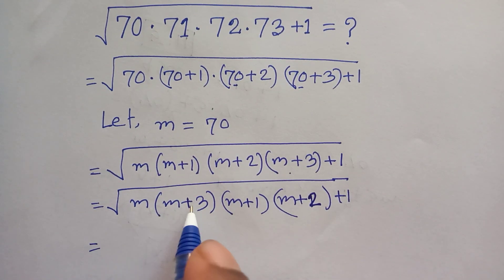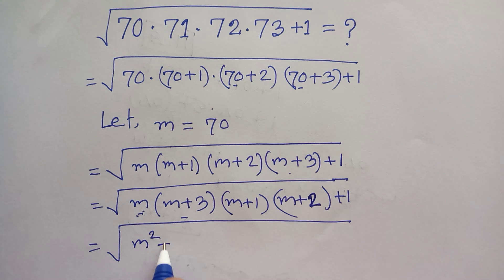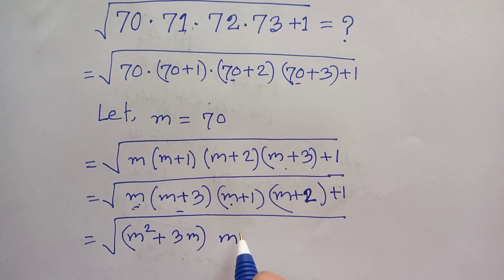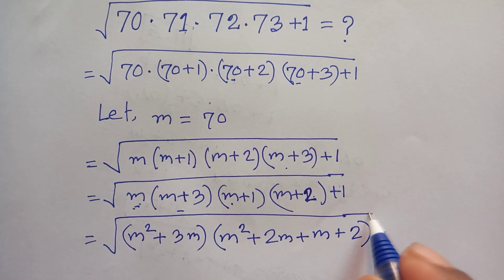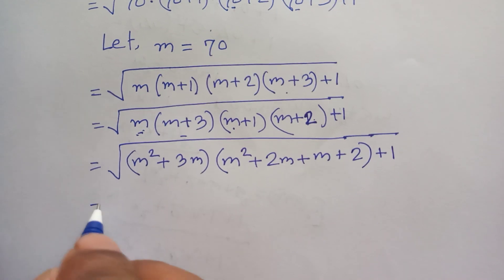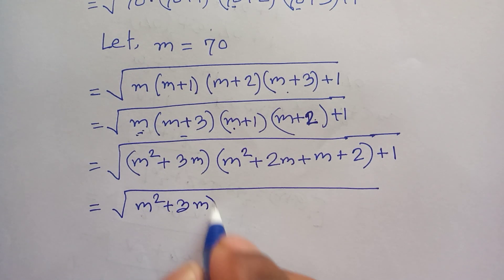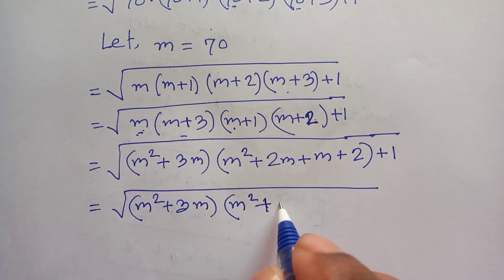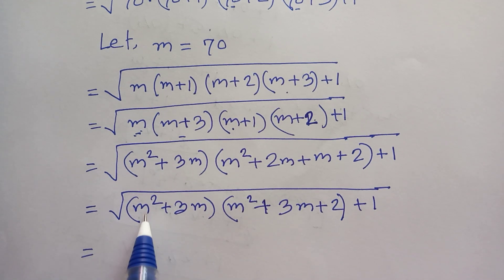Now we multiply: m times (m+3) gives m²+3m, and (m+1) times (m+2) gives m²+3m+2. So we have (m²+3m)(m²+3m+2) plus 1.